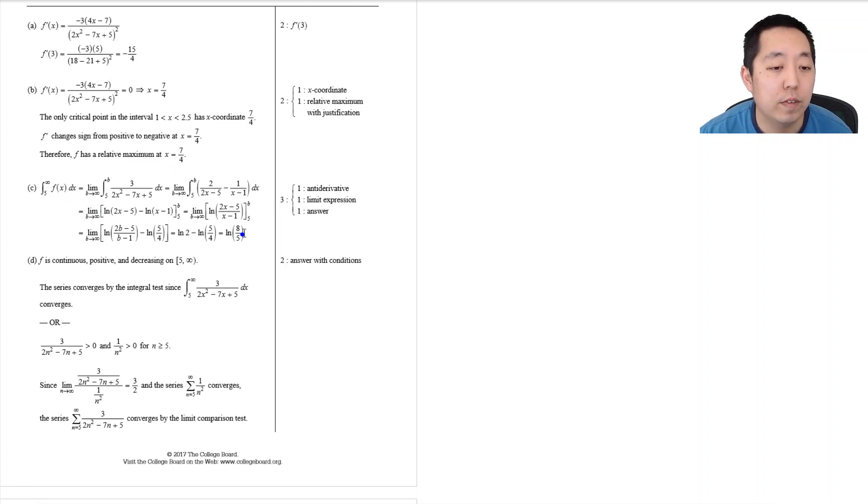ln of 8 fifths. Right, we got that. F is continuous, positive, and decreasing. Ah, it's positive and decreasing. So, it is decreasing. So, it converges. Is it positive? Well, yeah, it is continuous. It is decreasing. And is it positive?